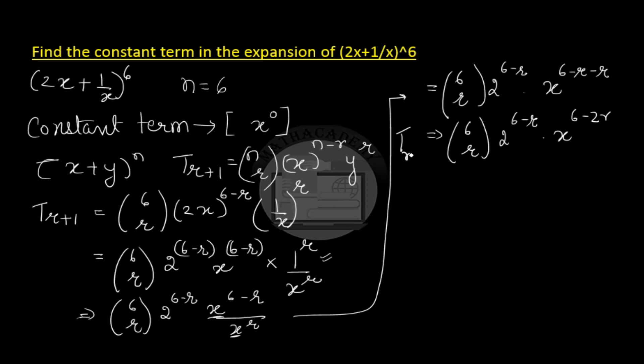This is our r plus 1th term. And how do we want this term to be? We want this term to be a constant term. And in the constant term the power of x should be 0. So in our case the power of x is 6 minus 2r. So you equate 6 minus 2r to 0, and on simplification you get r as 3.